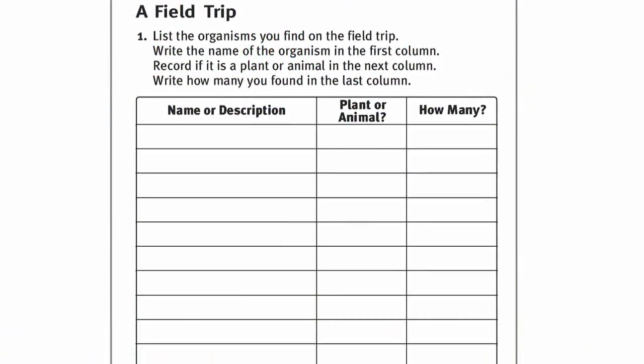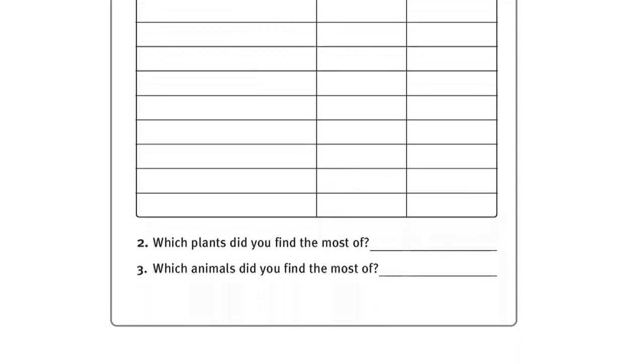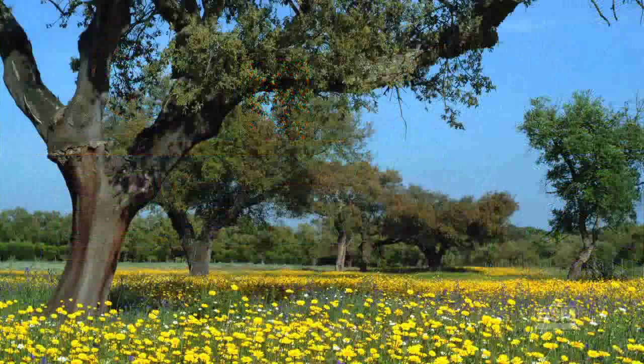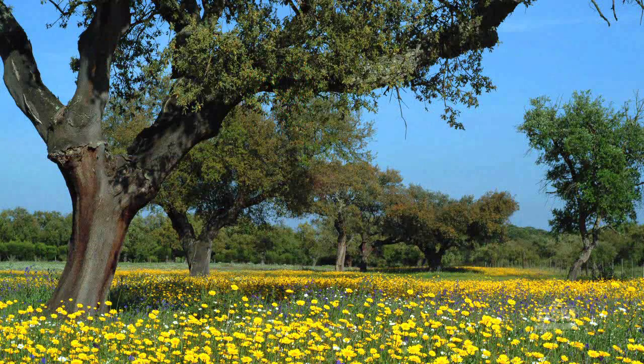To prepare for the activity, make a copy of Activity Sheet 3 for each student. Hang the How Many Organisms chart. Choose a location near the schoolyard for a field trip. The location should have 3 to 10 easily differentiated kinds of plants and some evidence of animal life. Obtain permission and make necessary arrangements for a field trip. Remind students and parents to dress appropriately for going outside.